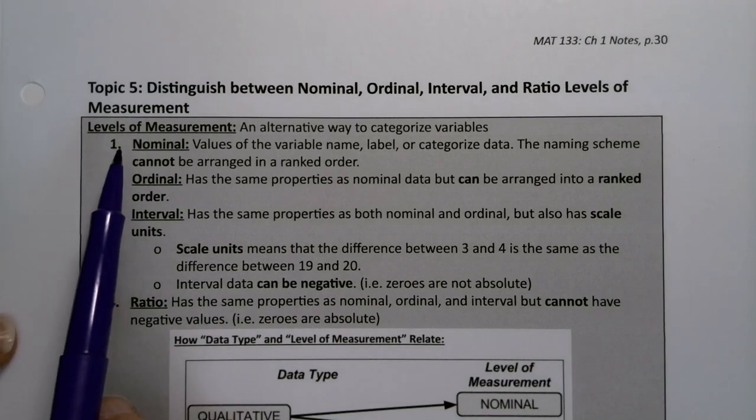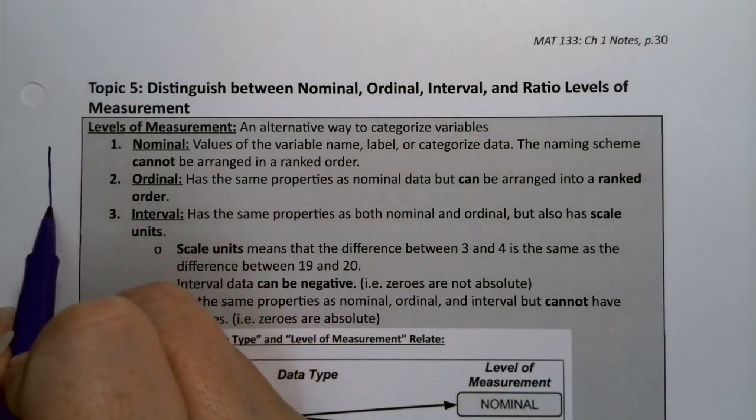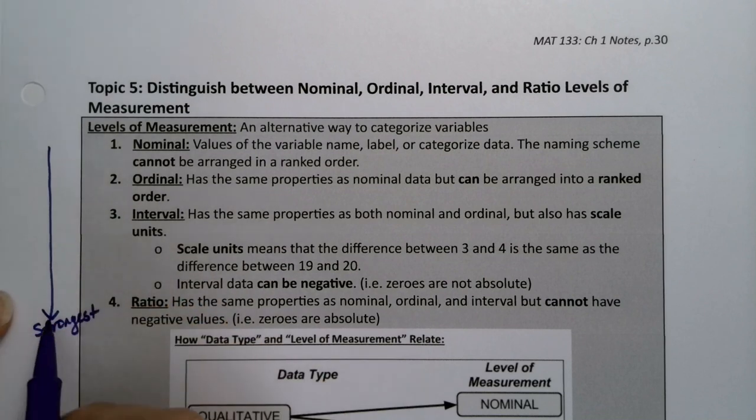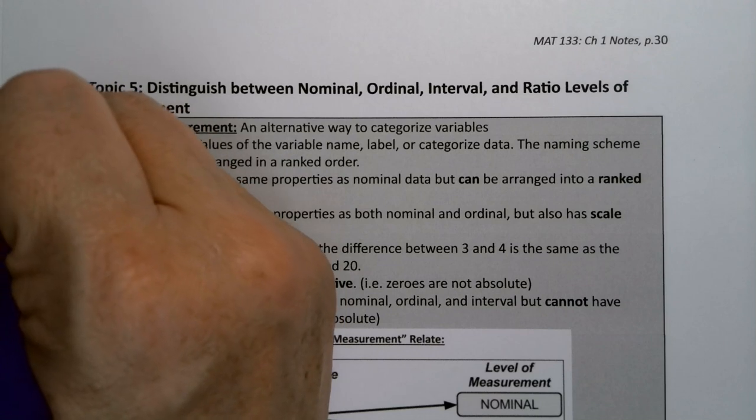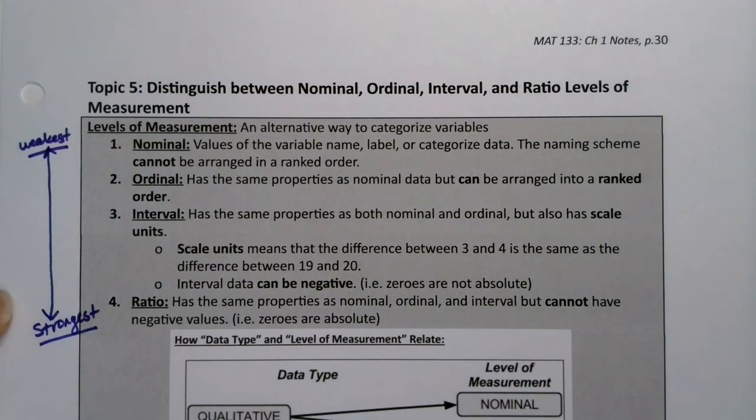Nominal being the weakest and ratio being the strongest. So if you want to think of it on a spectrum here, this is the strongest down here, the most meaningful, the most useful for calculations. And up here is the weakest. You can't do many calculations with it at all.